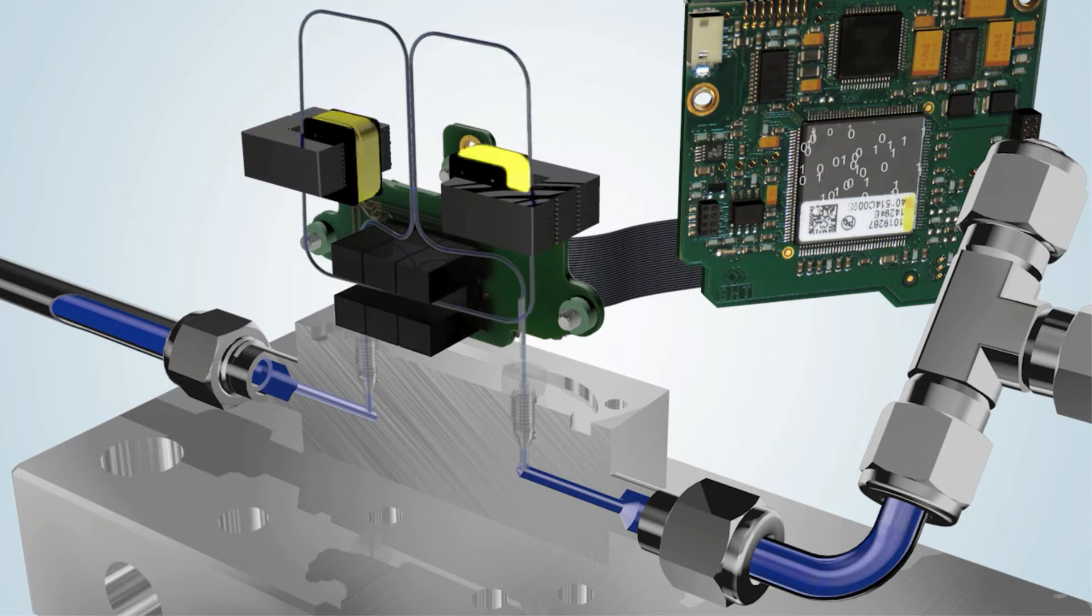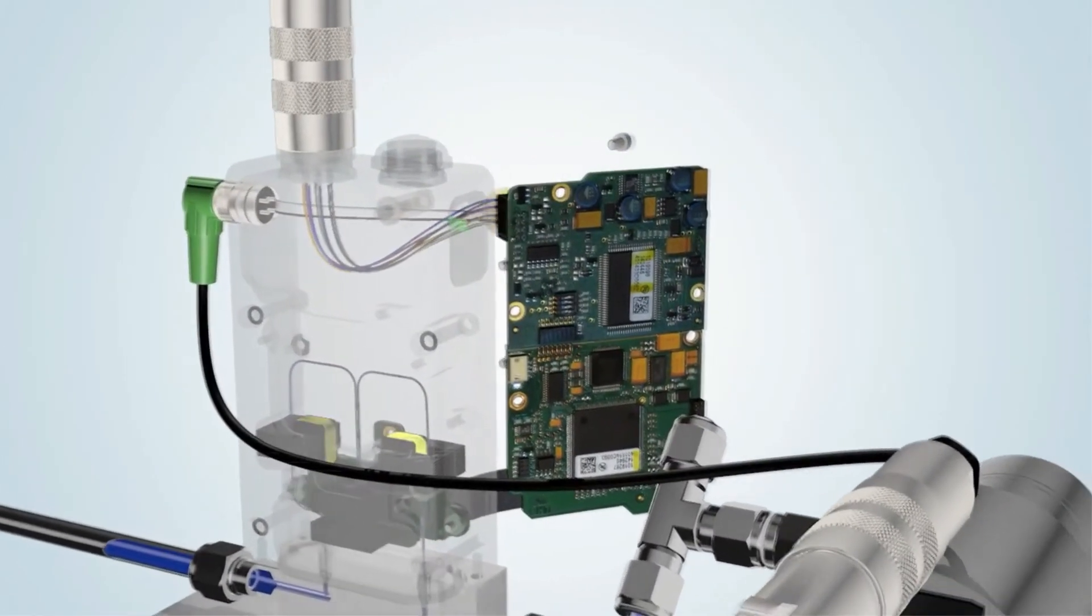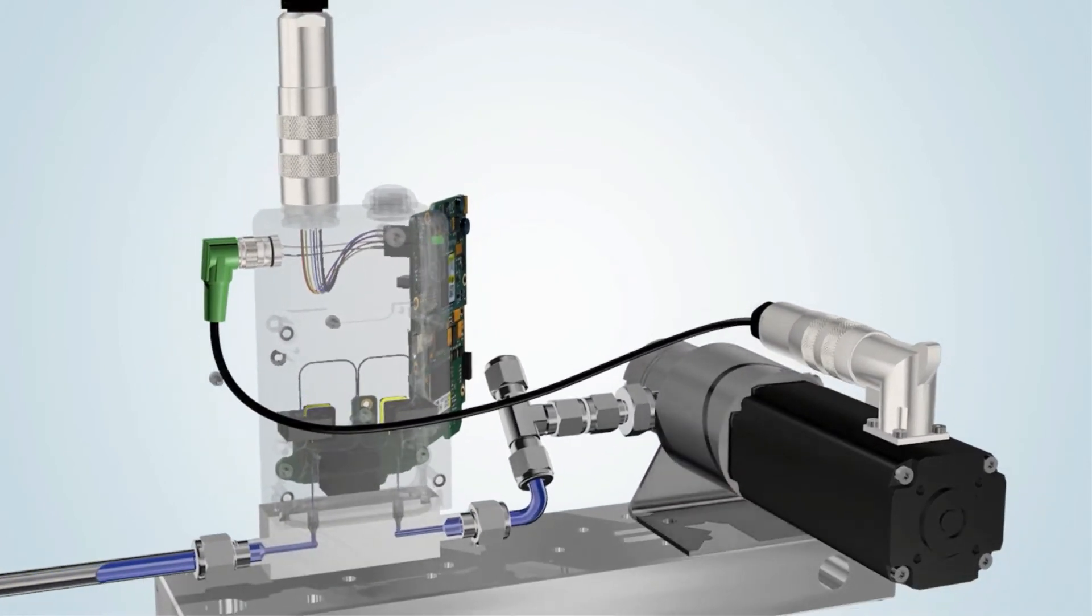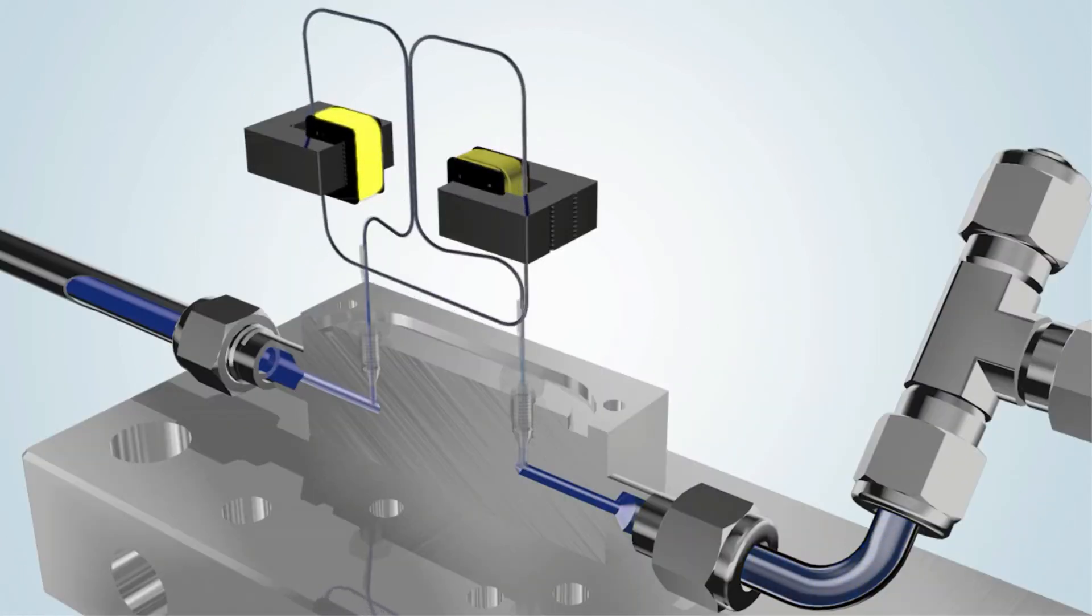If the measured value is different from the set point value, the integrated PID controller adjusts the speed of the pump in order to generate the correct output. This adjustment occurs in a fraction of a second.